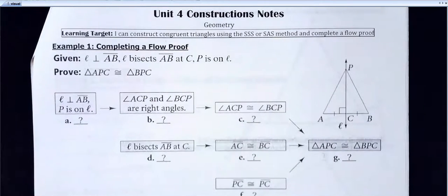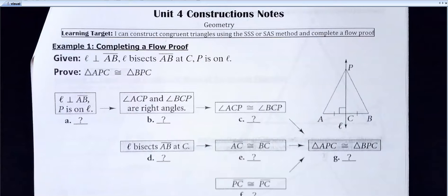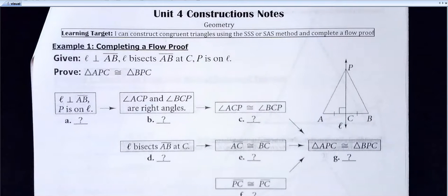So far in this class we've only done what they call a two-column proof, where you make your statement, you make your justification, and you're done. There are two other types of proofs. We're just going to do one other type in here.